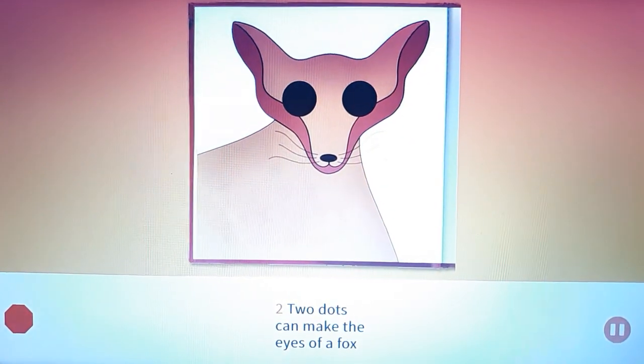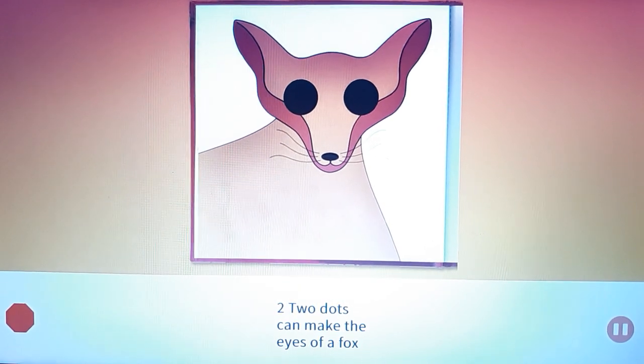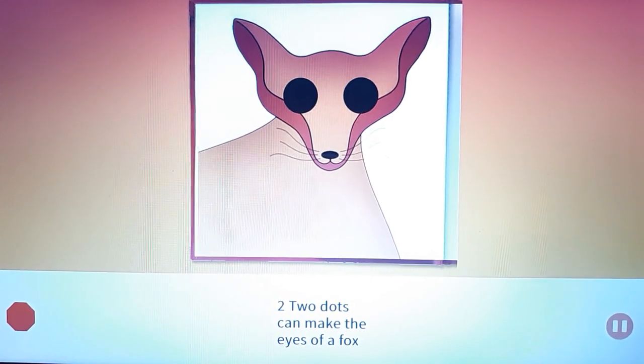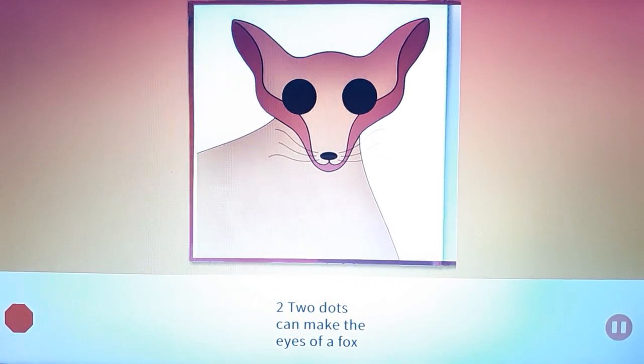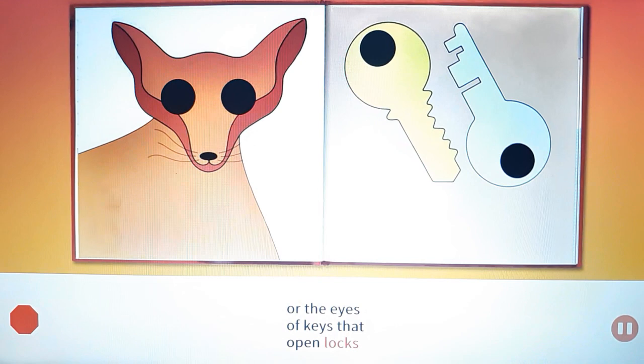Two. Two dots can make the eyes of a fox or the eyes of keys that open locks.